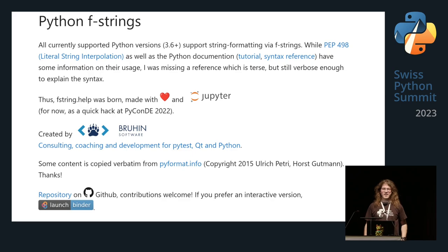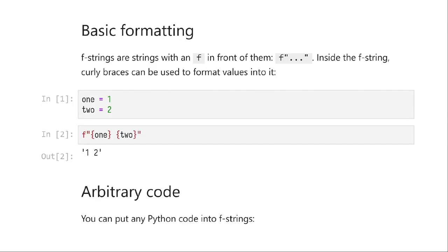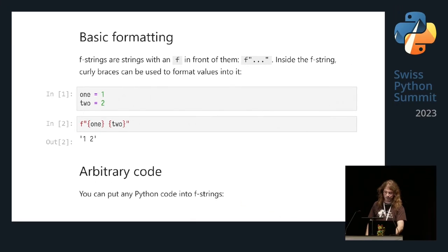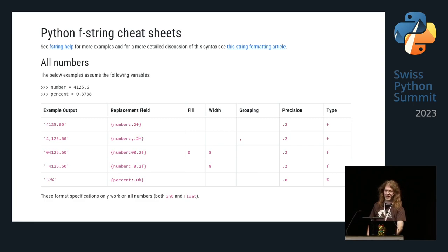What you will find there is an overview based on a couple of examples. You can even launch it interactively with Binder since it's a Jupyter Notebook, and play around with different f-string features. It tells you about formatting variables into your strings — the very basics and much more. It also has a little cheat sheet website, thanks to Trey Hunter teaming up with me, in a table form.